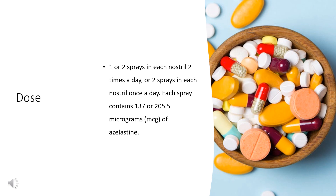For treatment of seasonal allergic rhinitis: adults and children 12 years of age and older, 1 or 2 sprays in each nostril 2 times a day; each spray contains 137 micrograms of azelastine. Children 2 to 11 years of age, 1 spray in each nostril 2 times a day; each spray contains 137 micrograms of azelastine. Children younger than 2 years of age, use and dose must be determined by your doctor.